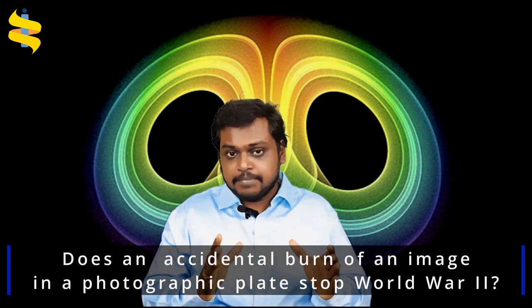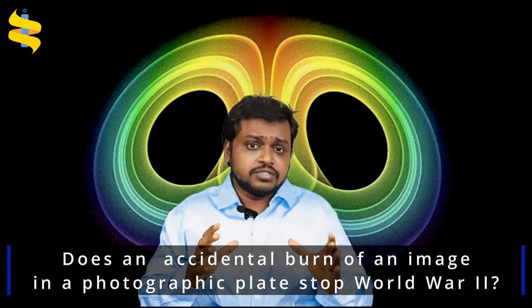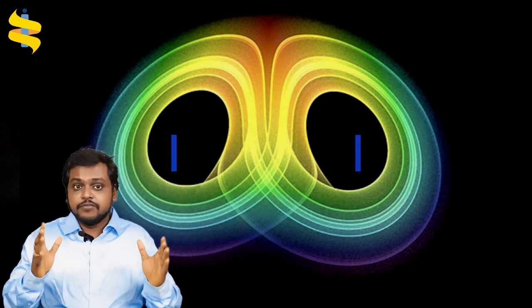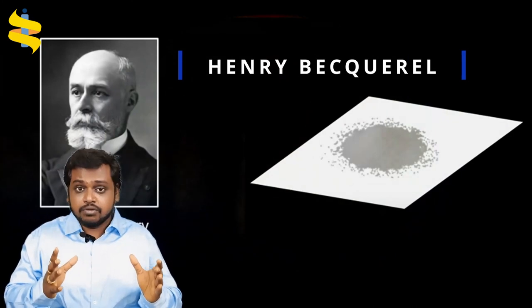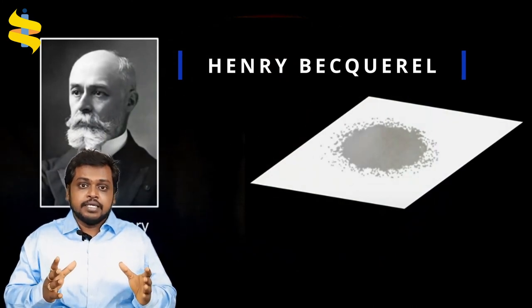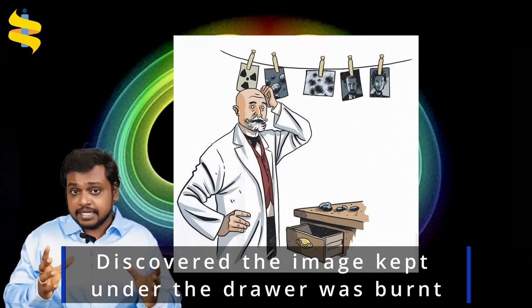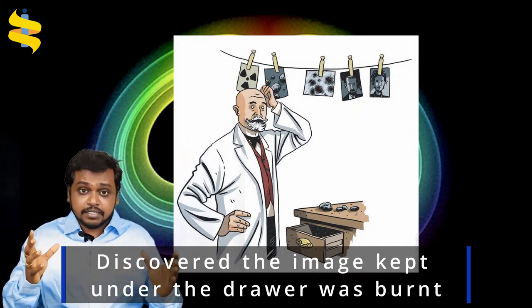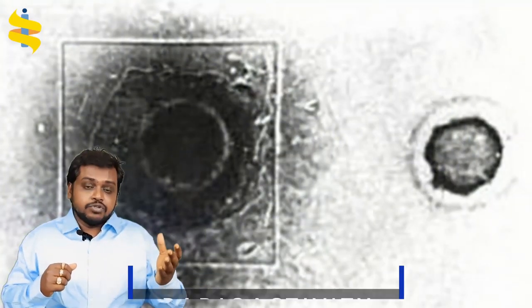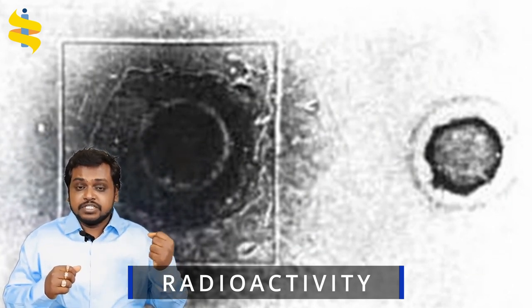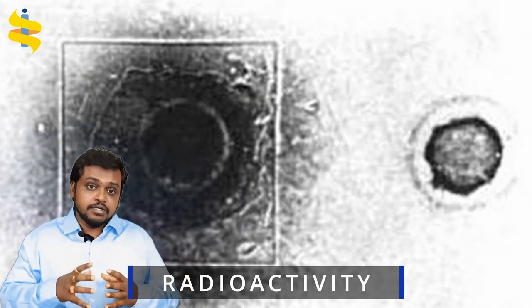Similarly, consider this fascinating question: did the accidental burning of an image on a photographic plate stop World War II? Approximately 50 years before World War II, a research scientist called Henri Becquerel discovered that an image on a photographic plate — which was wrapped and kept in a dark drawer — had been burnt. There was a crystal lying in the drawer, and he later found that radioactivity present in the crystal had burnt the image.